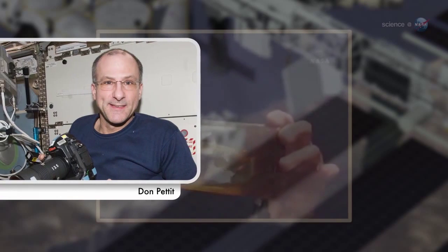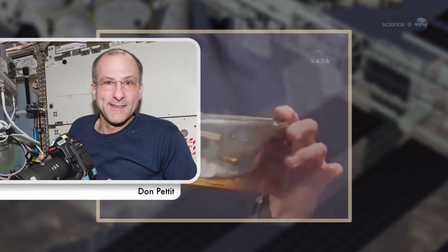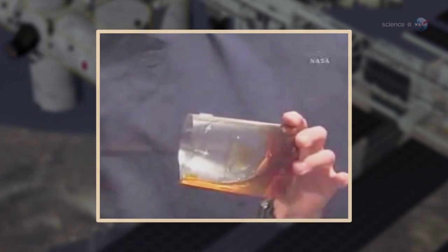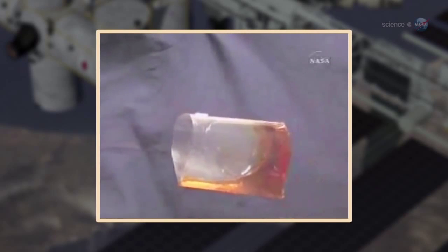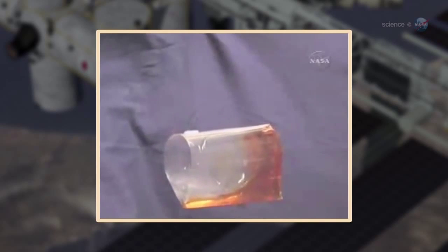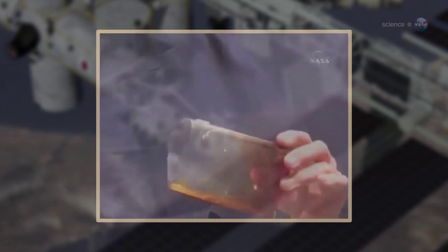Astronaut Don Pettit, who worked with the capillary flow experiment during his time on board the space station, helped invent the cup. And he shares the patent with Weislogel and two mathematicians, Paul Conkiss and Robert Finn, who performed the first theoretical analysis of the phenomenon.